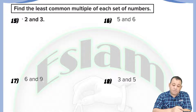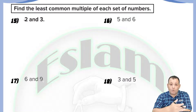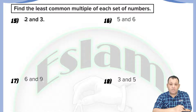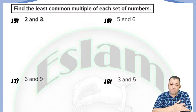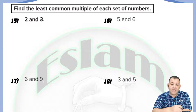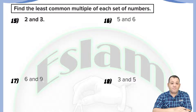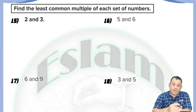The multiples of 2 are 0, 2, 4, 6, 8, 10, and so on. The multiples of 3 are 0, 3, 6, 9, 12, 15, and 18 — any number in the times table of 3. We need to find the least number among the common multiples.